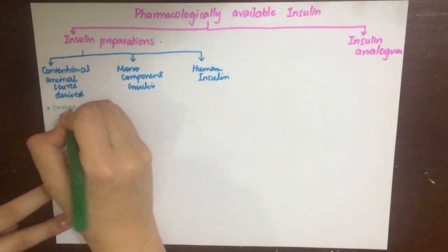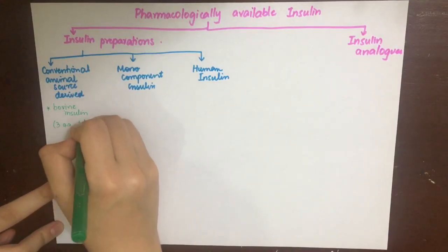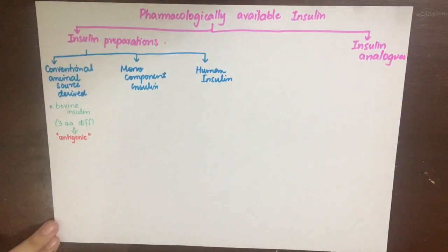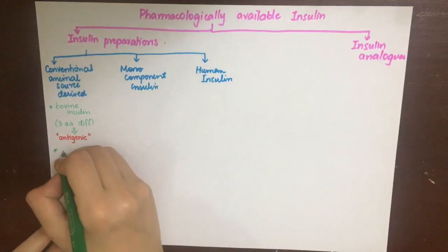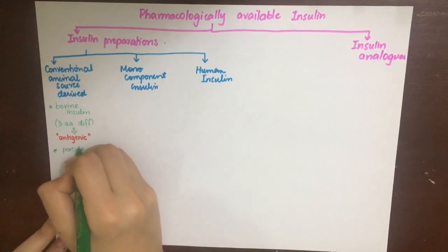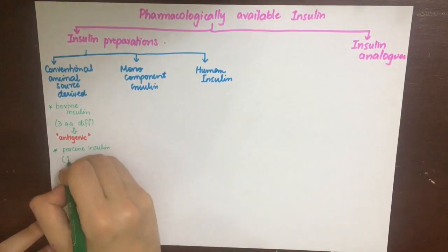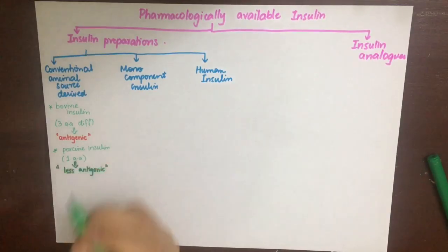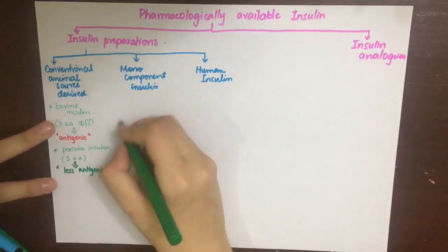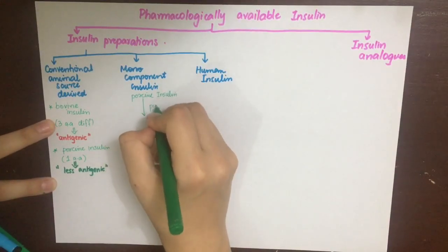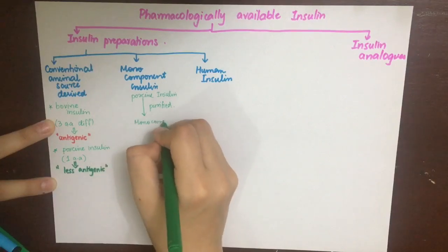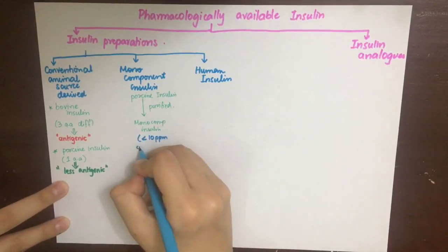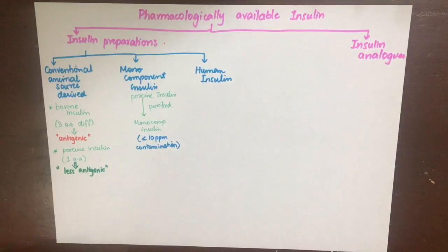Conventionally, insulin was derived from beef (bovine insulin) or pig (porcine insulin). Bovine insulin differs from human insulin by 3 amino acids and is antigenic because it may contain pancreatic proteins or C-peptide that makes it pro-insulin. Porcine insulin has only one amino acid different from human insulin and is less antigenic than bovine. Both are not used currently. Monocomponent insulin is a purified form of porcine insulin that does not contain pancreatic proteins or pro-insulin, and should have less than 10 parts per million pro-insulin contamination.